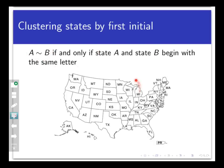For example, Michigan and Minnesota are equivalent under this relation, and so are Texas and Tennessee. Note that this really is an equivalence relation, as you can easily check reflexivity, symmetry, and transitivity.